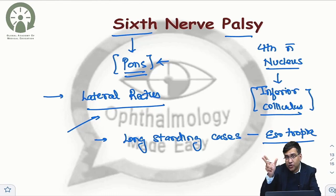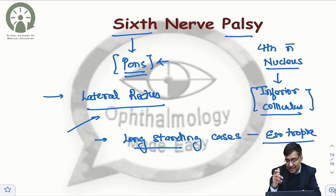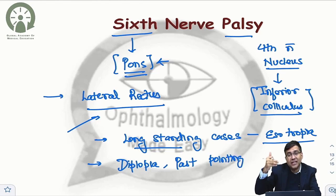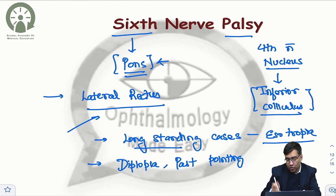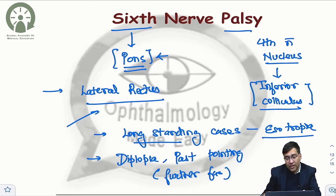As in third nerve palsy there can be exotropia, opposite to that in sixth nerve palsy there can be esotropia. The mechanism is that the unrestricted action of the third nerve muscles causes esotropia. Since this is a paralytic squint, features like diplopia and past pointing would be present. The secondary image formed in these patients would be further away from the real image.